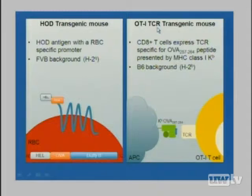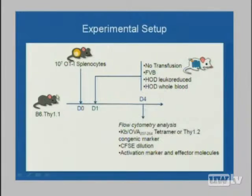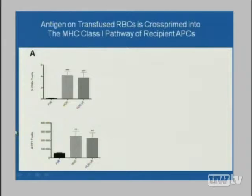What you can do is adoptively transfer small numbers of TCR-transgenic cells into a wild-type mouse and therefore have a naive precursor frequency that you can analyze. The experimental setup was to take C57BL/6 mice, give them OT-1 splenocytes — OT-1 splenocytes recognize a peptide from Ovalbumin presented by K^b, a mouse MHC class I molecule — and then give the mice a transfusion. The transfused blood was from FVB mice, which have a different MHC type than the recipients.